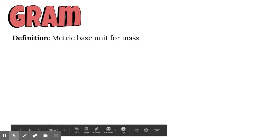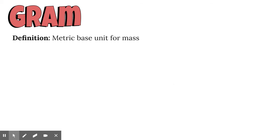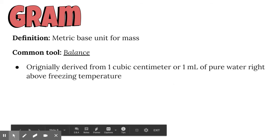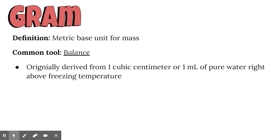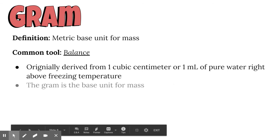When we look at the gram, it's the metric base unit for mass. We use a balance, but it was originally derived from one cubic centimeter or one milliliter of pure water right above freezing temperature, when it's at its densest. It's the base unit, so everything is built off of a gram.